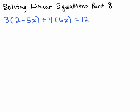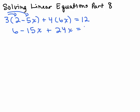Before trying to do the addition and multiplication properties of equations — where you could add, multiply, or divide the same number to both sides of an equation — we want to simplify the left-hand side because there's distributive property and a multiplication. So if we distribute the three, this will give us six. Three times two minus three times five x is negative 15x, plus four times six x is 24x.